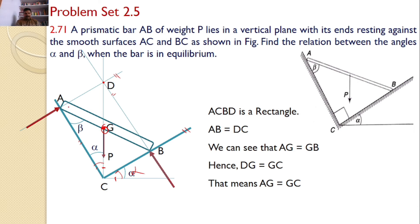That means AG equals GB, and DG equals GC. That means AG equals GC. All the values are the same. So AG equals GC equals DG equals GB.